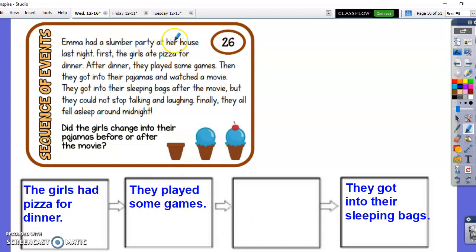So it says Emma had a slumber party at her house last night. First, the girls ate pizza for dinner. After dinner, they played some games. Then, they got into their pajamas and watched a movie. They got into their sleeping bags after the movie, but they could not stop talking and laughing. Finally, they all fell asleep around midnight.